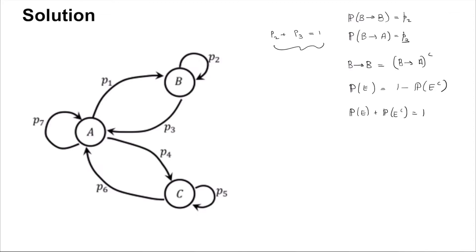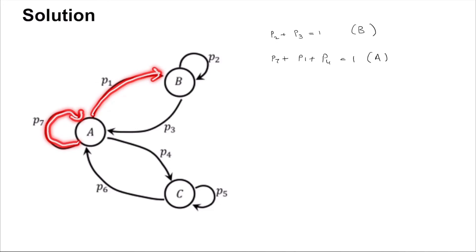Like this, you can write the relationships for all the states. This was state B. Then for state A, you will have P7 plus P1 plus P4 is equal to 1. These are all the arrows going out of state A. Similarly, for state C, you have these arrows, so you will get P6 plus P5 is equal to 1.